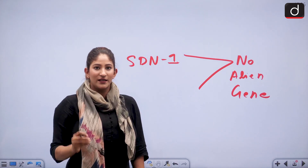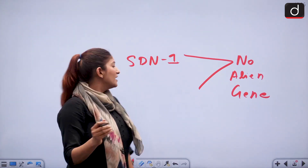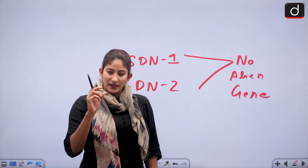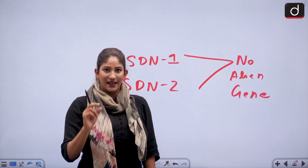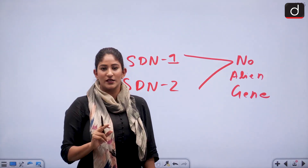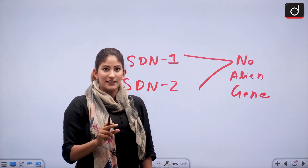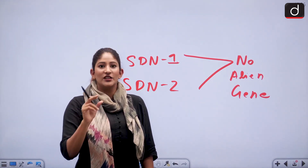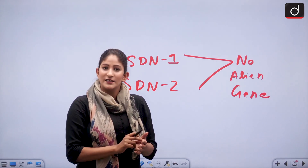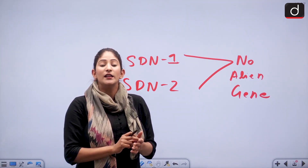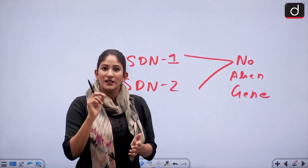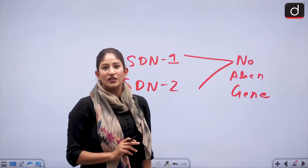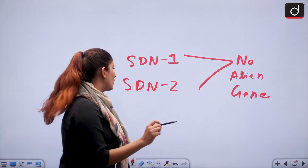In SDN2, only the strand is deleted or a nuclease is inserted; there is a template of gene that is edited. No alien gene is introduced here either. The edited template is inserted into the gene, and when that edited gene template is inserted into the host gene, it gives rise to a specific sequence, because of which the entire DNA gets modified. No alien gene is present in SDN2.